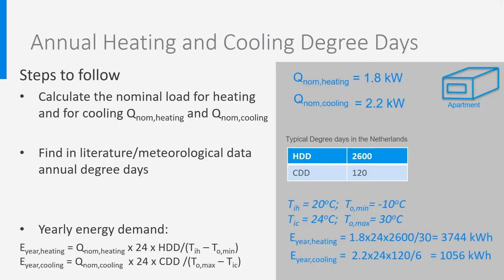How does a calculation with degree days look like? On the left the steps, on the right the example. Here again, we need first to have determined the nominal powers for heating and cooling — in our example, 1.8 and 2.2 kilowatt. Then you need to find what the degree days are in your region. In the Netherlands, the heating degree days are around 2600, while the cooling degree days are very low for residential buildings, around 120. Finally, you need to use these equations. You see in these equations T_iH and T_iC, which are the indoor temperatures used when calculating the nominal powers for heating and cooling — respectively 20 and 24 degrees C in our example.